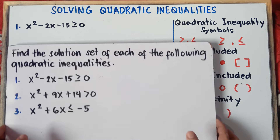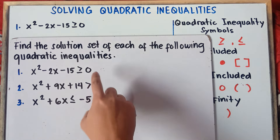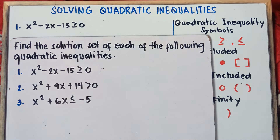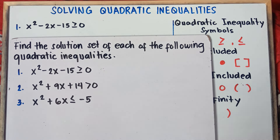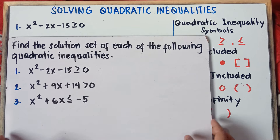I will give you three examples for you to really understand this. So this will be example number one: x squared minus 2x minus 15 is greater than or equal to zero. For number two and number three, I will make another video because we need to explain number one step by step. Feel free to see that video for numbers two and three.